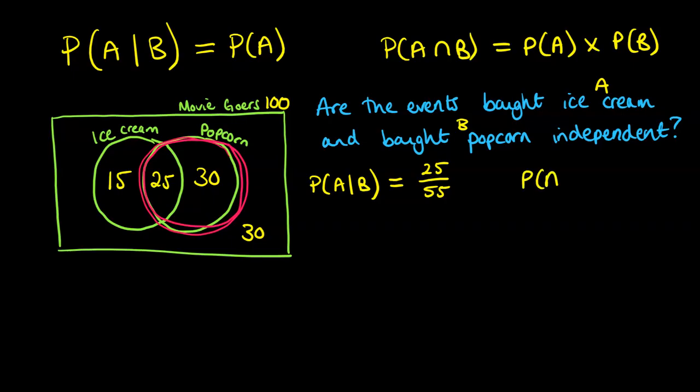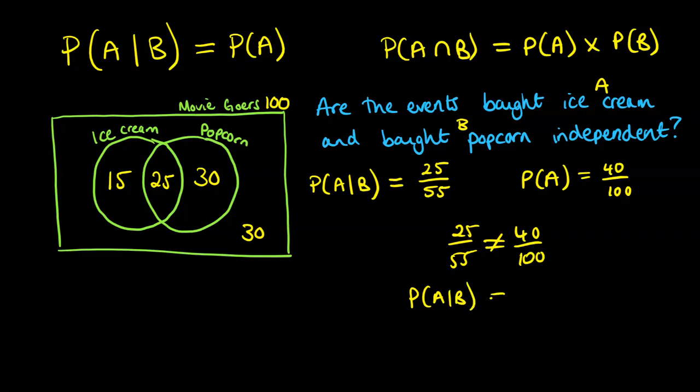Now, the probability of A on its own, so that's buying ice cream, that is 40 out of 100. Now, 25 over 55 does not equal 40 over 100. So probability of A given B is not equal to the probability of A, therefore not independent.